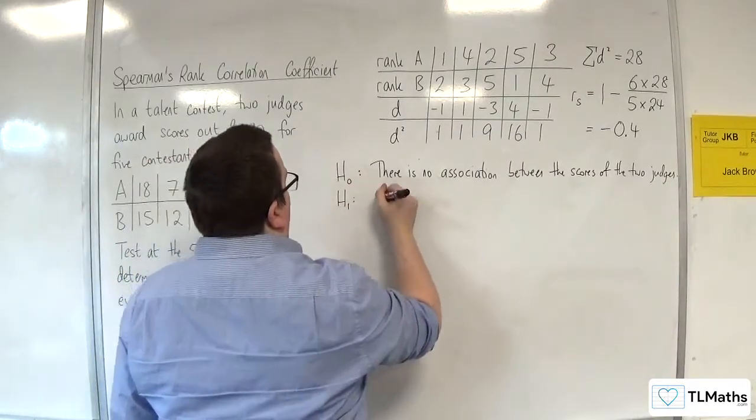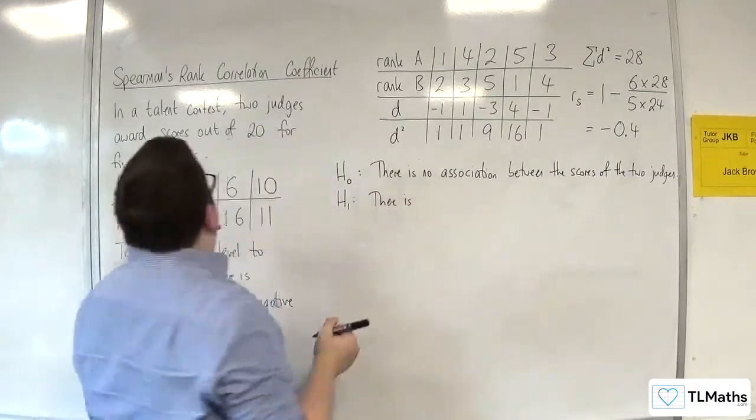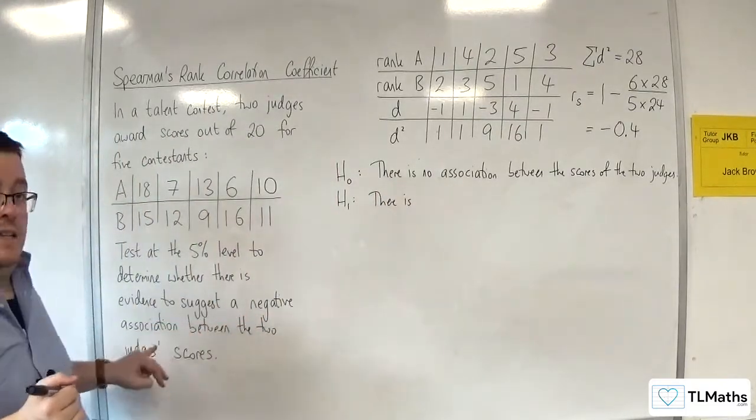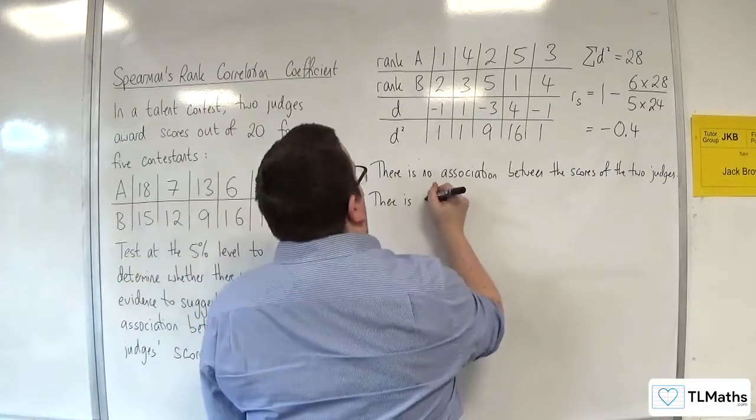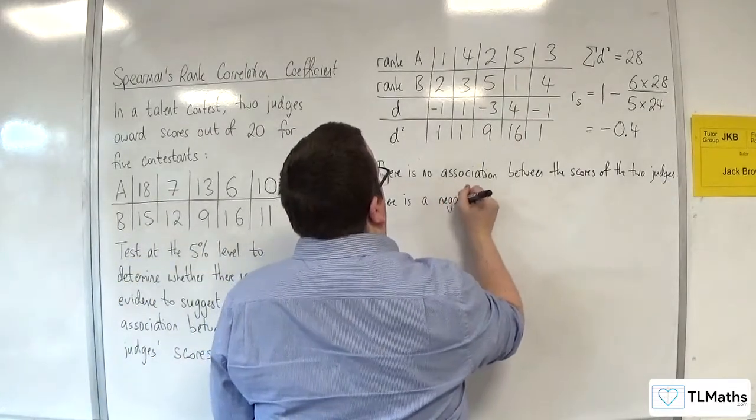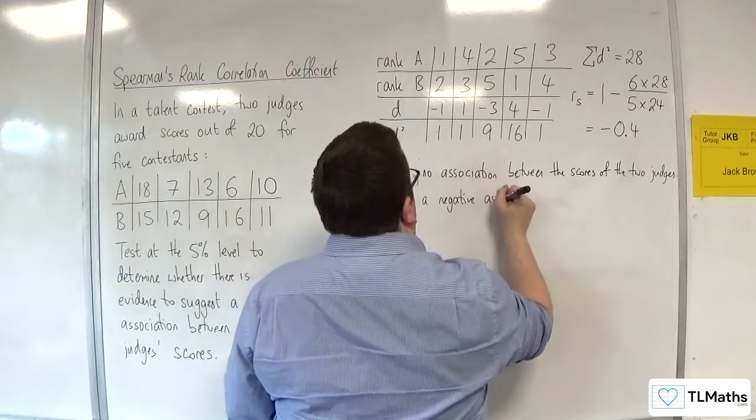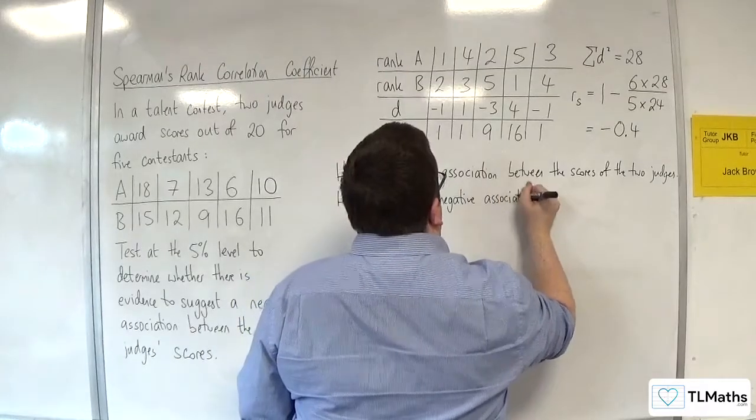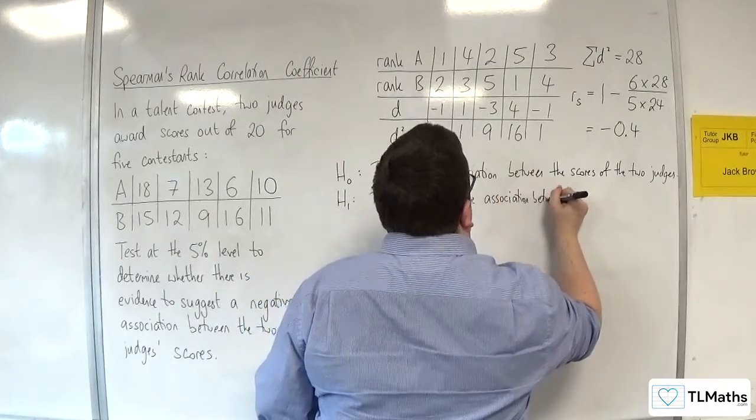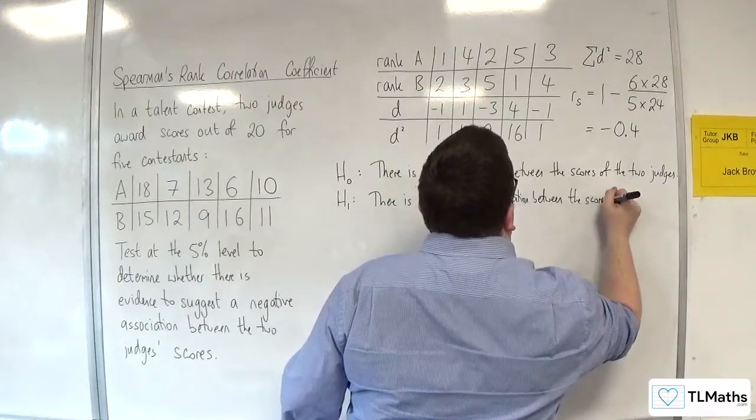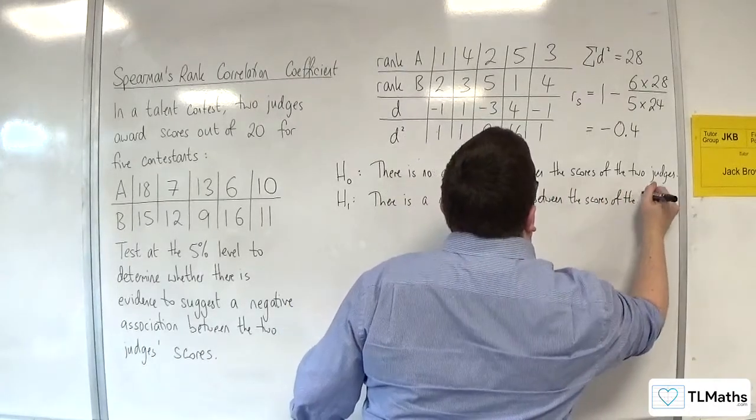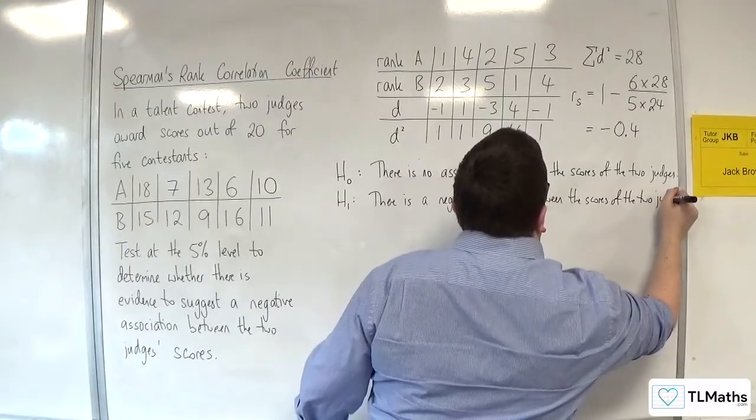So, H₁, there is a, so we're testing a negative association. So, there is a negative association between the scores of the two judges.